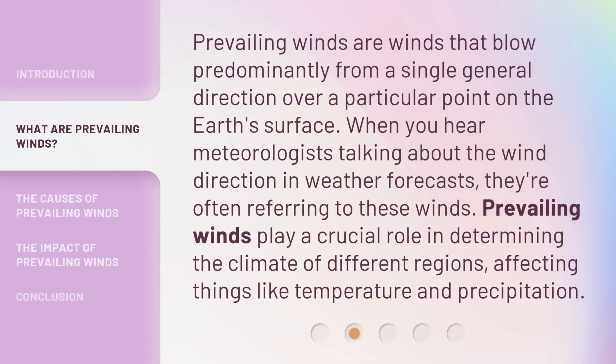Prevailing winds are winds that blow predominantly from a single general direction over a particular point on the Earth's surface. When you hear meteorologists talking about the wind direction in weather forecasts, they're often referring to these winds. Prevailing winds play a crucial role in determining the climate of different regions, affecting things like temperature and precipitation.